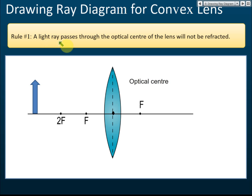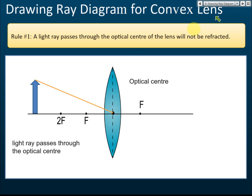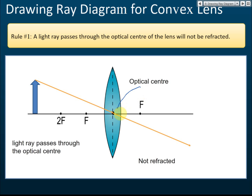Rule number one: a light ray that passes through the optical center of the lens will not be refracted. So if a light ray passes through the optical center, there is no refraction — the light ray will go straight forwards. That is rule number one: light ray passes through the optical center, goes straight forward, no refraction.